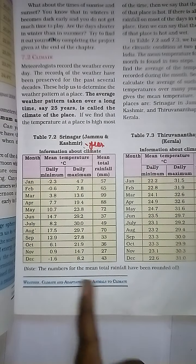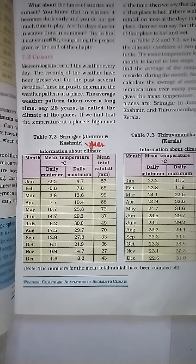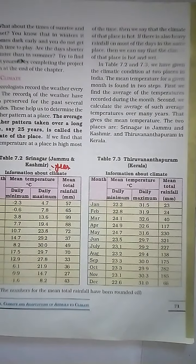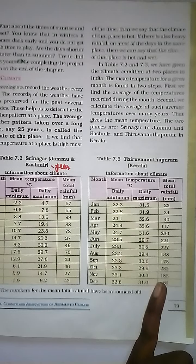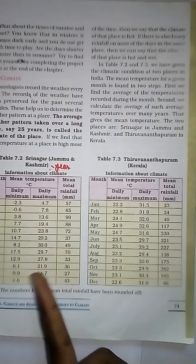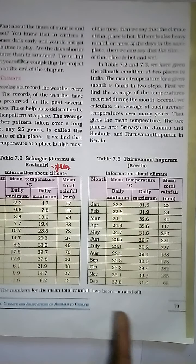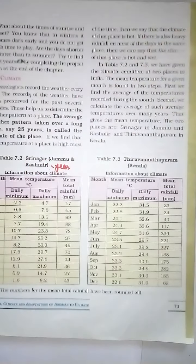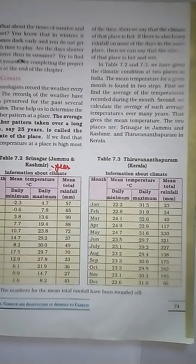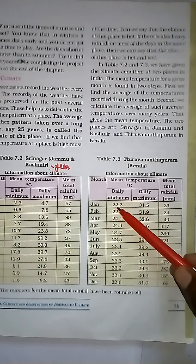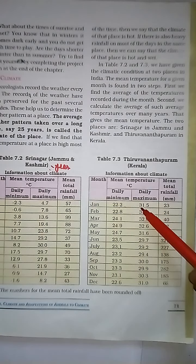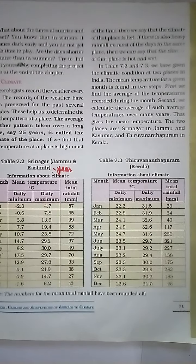The next table shows Thiruvananthapuram in Kerala, with information about climate — mean temperature, daily minimum, daily maximum, and total rainfall. Compared to Jammu and Kashmir, Thiruvananthapuram is very different. J&K daily minimum is minus 2.3 and daily maximum 4.7, whereas Thiruvananthapuram daily minimum is 22.2 and daily maximum is 31.5. That is why the climate changes from place to place.